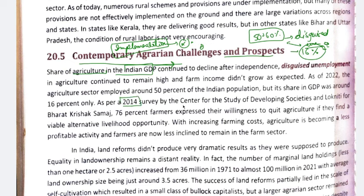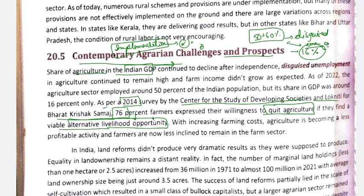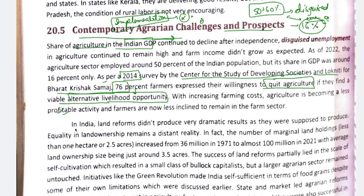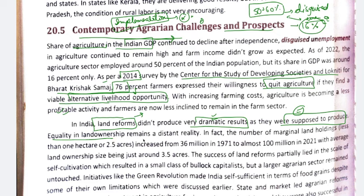A survey was done in 2014 by the Centre for the Study of Developing Societies and Lokniti for Bharat Krishak Samaj. It found that 76% of farmers wanted to quit agriculture if they had a viable alternative livelihood opportunity. In India, land reforms — which we have discussed in detail — have not produced the dramatic results they were supposed to. Equality in land ownership was not achieved.